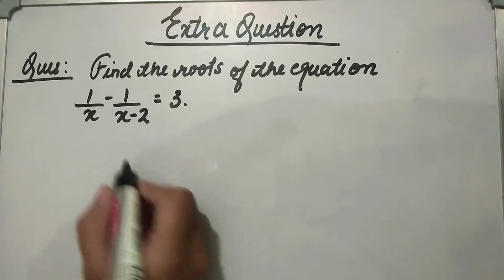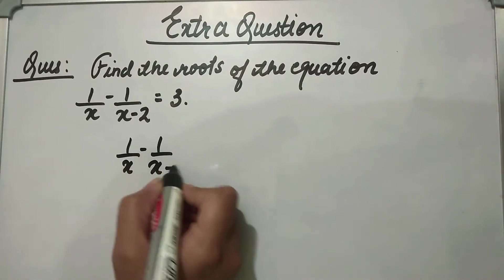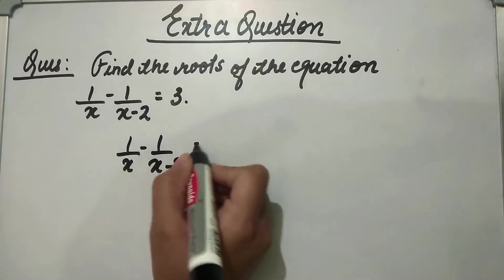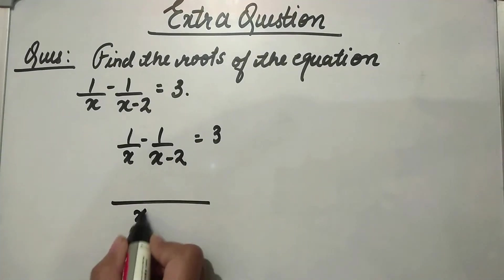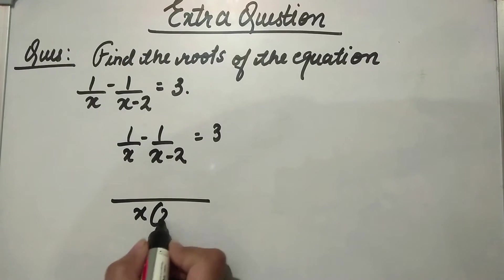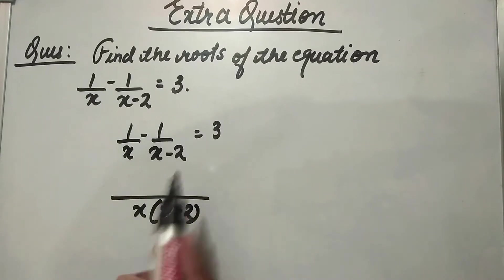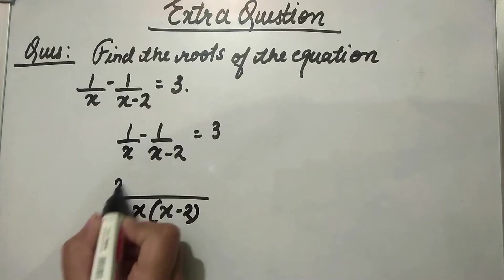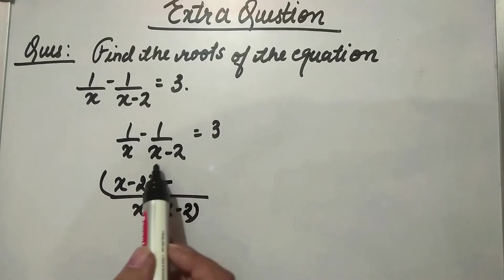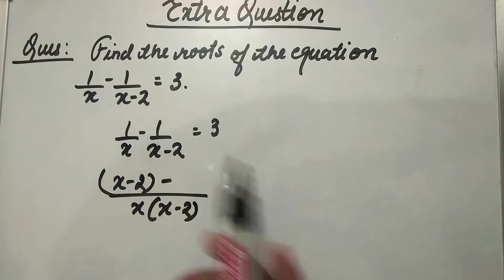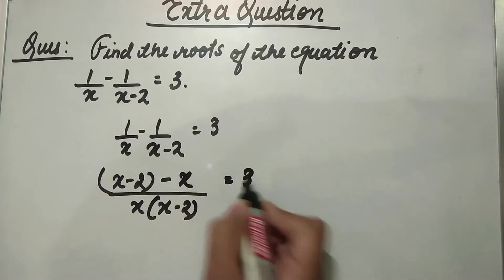So first let's solve this: 1 upon x minus 1 upon x minus 2 is equal to 3. We will take LCM. The LCM will be x into x minus 2. In the numerator, x minus 2 minus x is equal to 3.